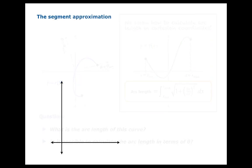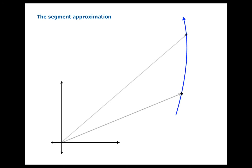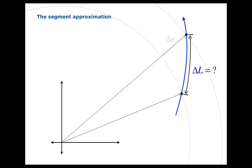We'll start with an approximation for a small piece of curve. Suppose we have a polar curve and two nearby points, and we would like to find delta L — the little bit of arc length from one point to the next. Let's draw in some curves of constant radius, concentric circles about the origin. The change in the R coordinate from one point to the next we'll call delta R, and the change in the theta coordinate we'll call delta theta.